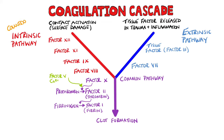The way I remember which factors are in the intrinsic pathway is by thinking of countdowns. For example, countdowns go 3, 2, 1 — but this time we remember that the countdown for the intrinsic pathway is 12, 11, 9, 8.